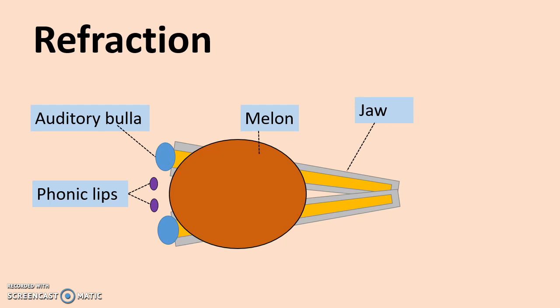Now on the way to the blow hole, the air can go through these phonic lips. Now they're like the reeds in a clarinet or the end of a trumpet. They vibrate very quickly and they make high pitched ultrasonic sound. So the dolphins can make this very high pitched clicking sound with these phonic lips. So these phonic lips produce sound.